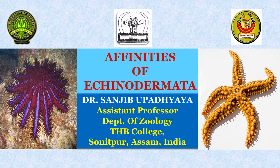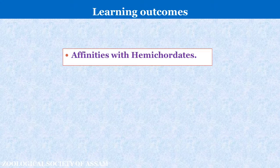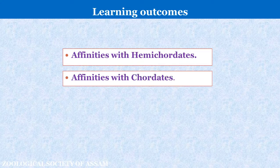I am going to discuss Affinities of Echinoderms. As you know, the phylum Echinoderms includes a variety of exclusively marine organisms, basically living on the shore, but mostly on the bottom of the sea. These organisms are known from very ancient times. The term Echinoderms was given by Jacob Klein in 1734. From this video lecture, students can learn the Affinities of Echinoderms with Hemichordates and Affinities of Echinoderms with Chordates.